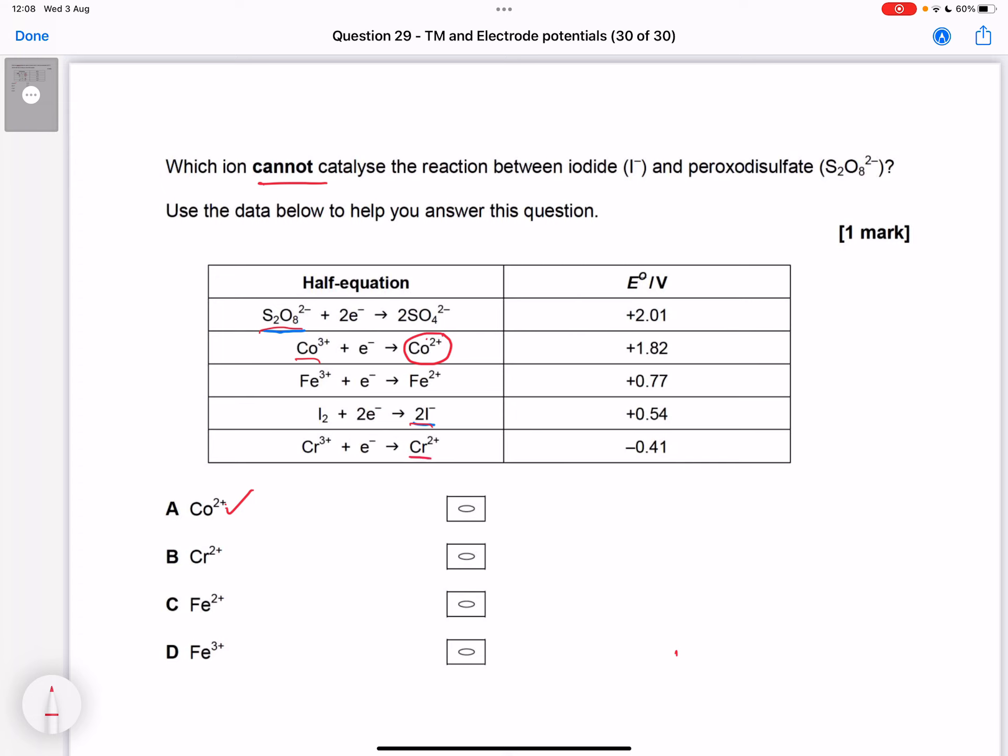Chromium 2+ is here. So chromium 2+ could react with the peroxodisulfate ions because the value is lower in the table. But then chromium 3+ would not be able to react with the iodide ions because its value is too low. So this one would not work.